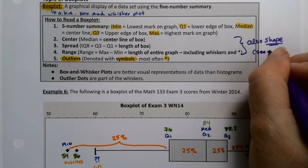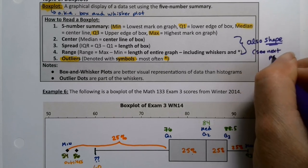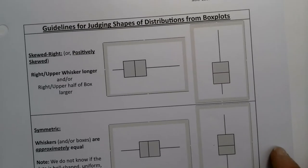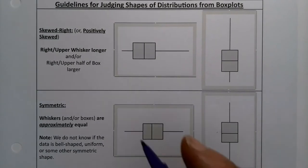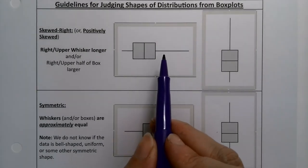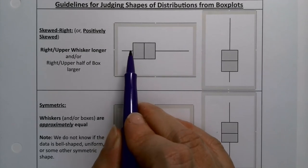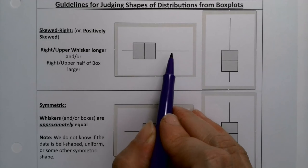See next page, because I have them all drawn out for you. The shape of a distribution can be skewed right or positively skewed. Remember, this is the positive side of the number line, and that's the negative side.